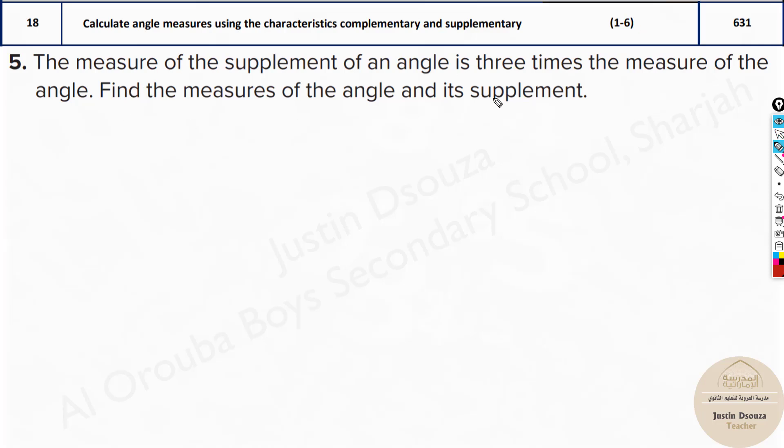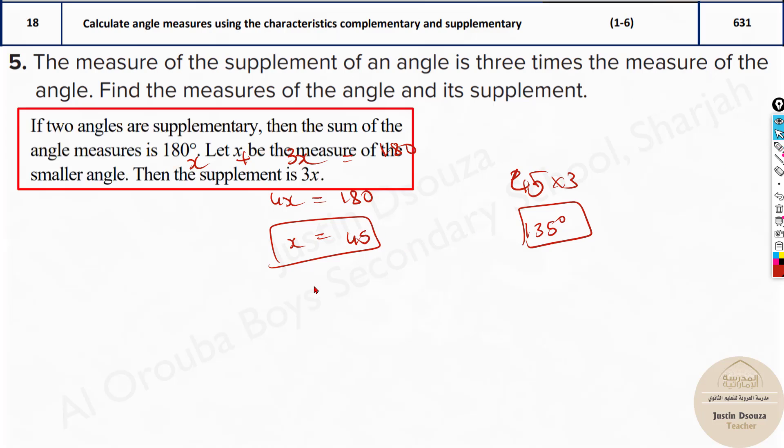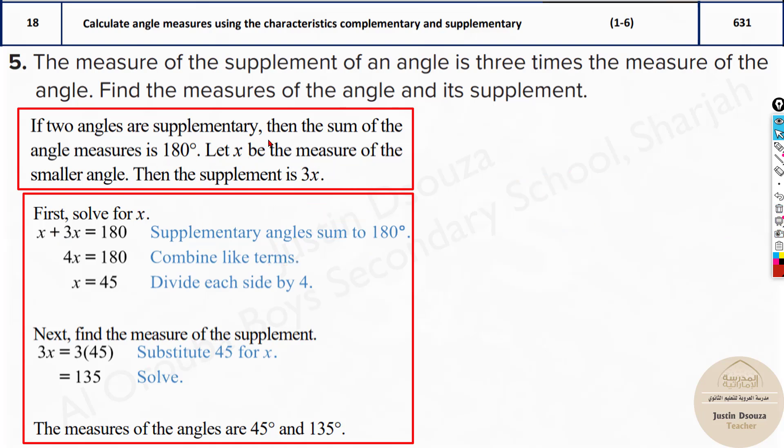Now here the fifth question. This is interesting because they have told the measure of a supplement of an angle is three times the measure of the angle. Imagine the smaller angle is considered to be x. Then what is the other angle? It will be 3x. So they are supplementary. They have told it's a supplement. So when you add them up, it should be 180 degrees. So it is 4x equals 180 degrees. So here it will be 45. 4 times 45 is 180, so x is 45. What about this? Multiply 45 times 3, you will have 135 degrees. So 135 degrees and 45 degrees are the measures. So they have clearly mentioned here: let x be the measure of the small angle and 3x is the supplement. Add them up, you must get the answer.